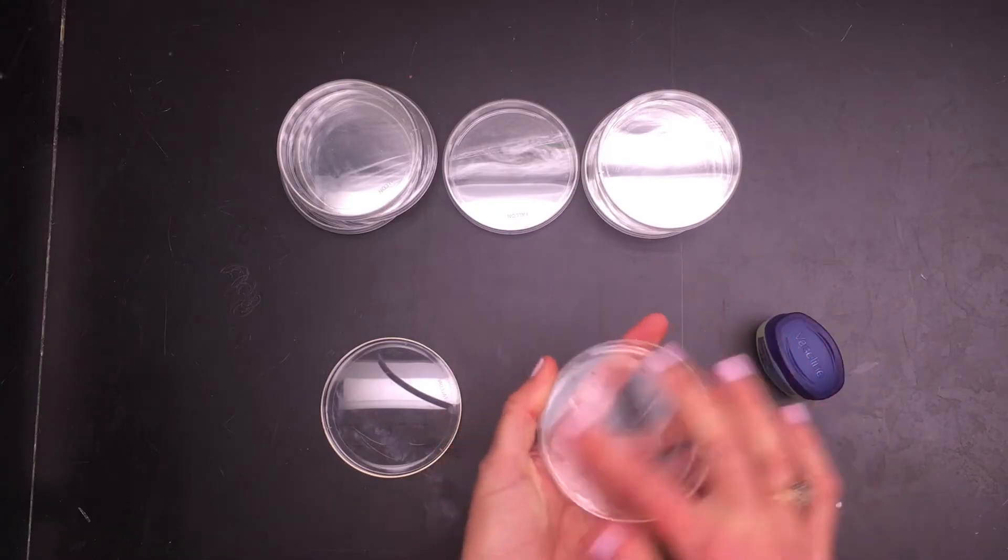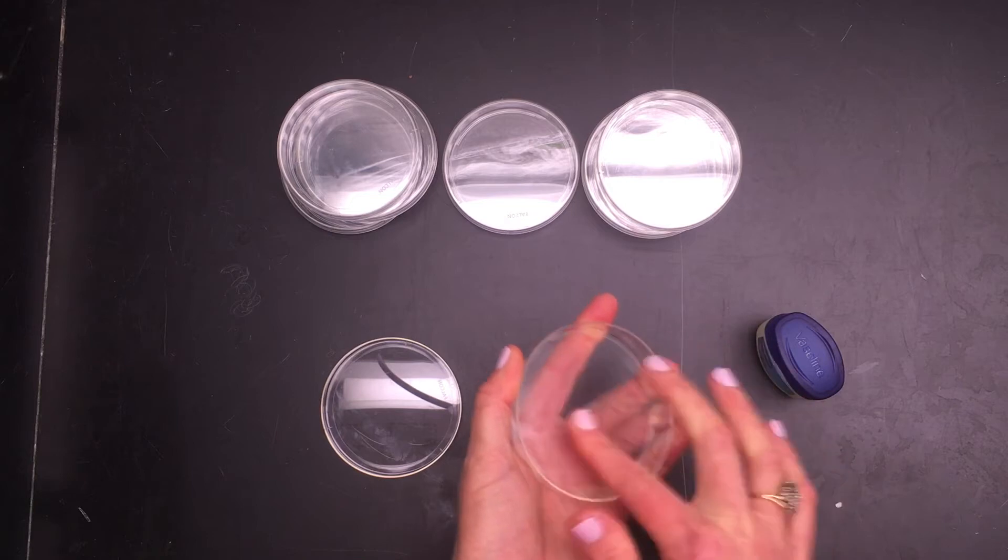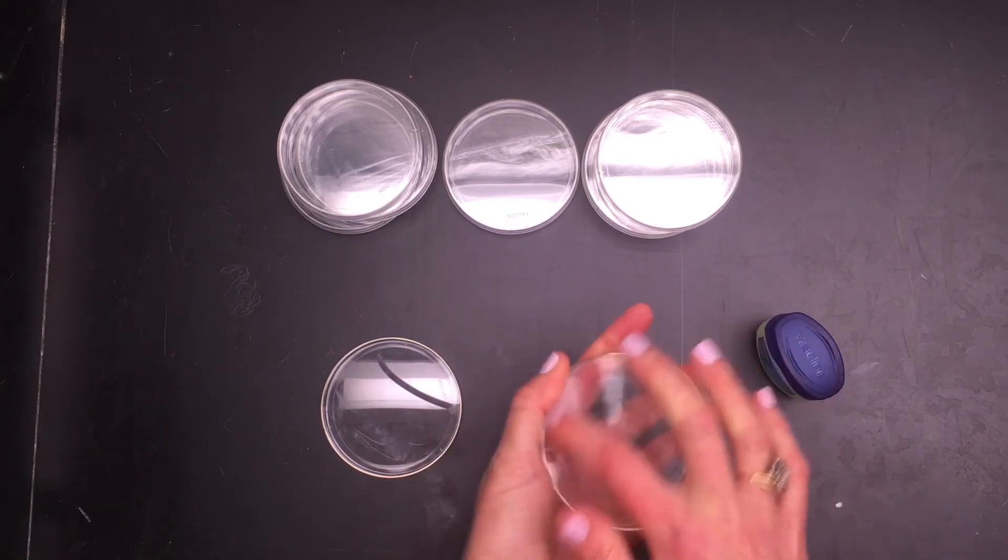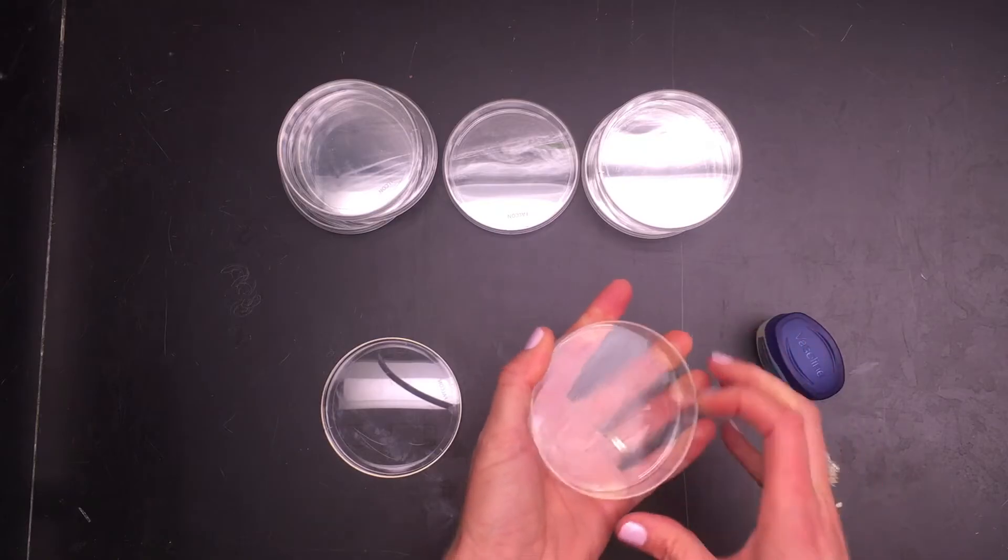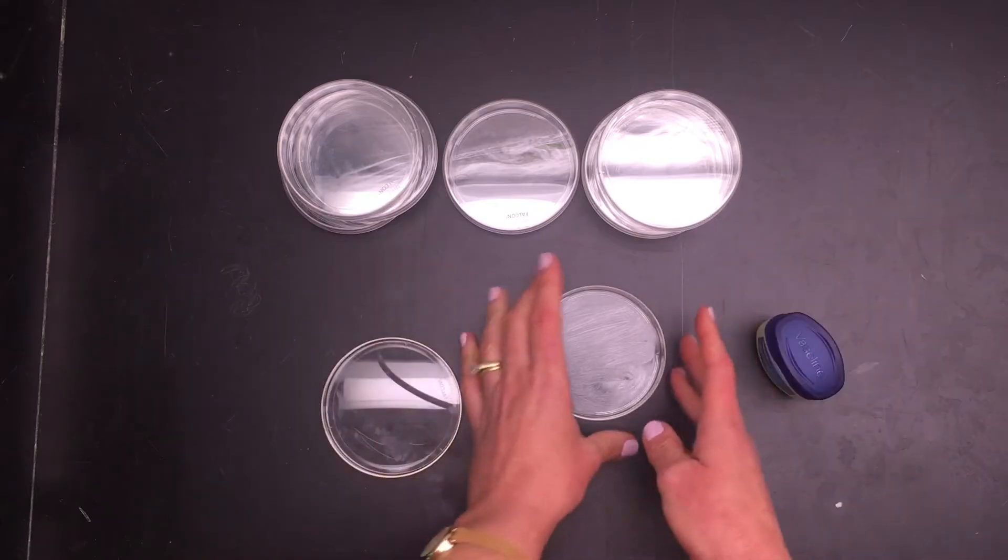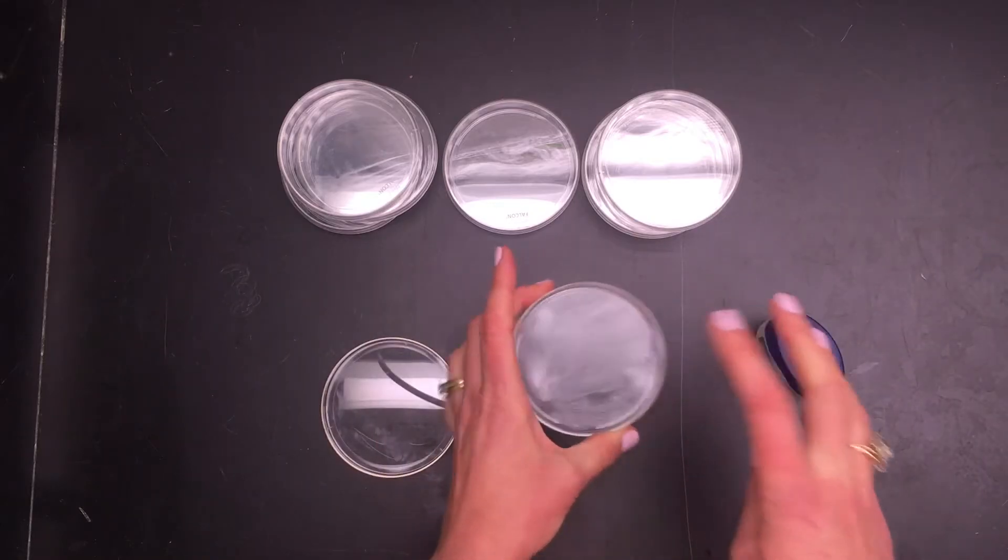It needs to be a thin coat. You don't want it thick and globby—it will be harder to count your particulates that way. A thin coat is plenty so that when particulates fall from the air onto your dish they will stick and you'll get some good data.